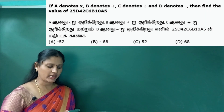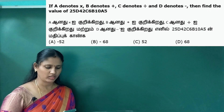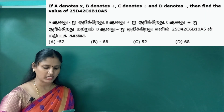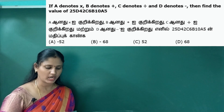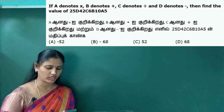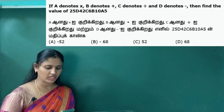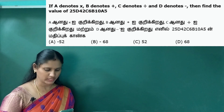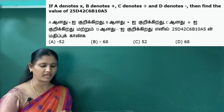Let's look at the first question. A means multiplication. B means plus. C means divided by. D means minus. The expression is: 25 D 42 C 6 B 10 A 5. Let's write the numbers: 25, 42, 6, 10, 5.